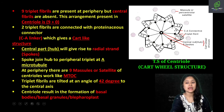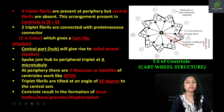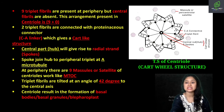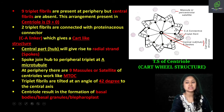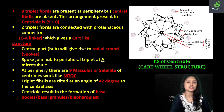Also, ye jo microtubule hain — single microtubule mein 13 protofilaments present rehte hain. So A mein aapko 13 protofilaments present rehenge. Jab ki B mein only 10 protofilaments are going to be present, yani remaining ye share karega apne preceding microtubule se, that is A. Isi tarike se C mein bhi aapke 10 protofilaments present rehenge — ye bhi share karega apne remaining protofilaments, B se. So A has complete 13 protofilaments, while B and C are going to have 10 protofilaments.